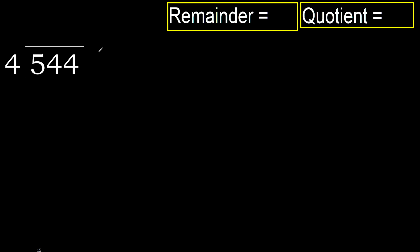544 divided by 4. 5 is not less, therefore we work with 5. 4. Multiply by which number is nearest to 5, but not greater. 4 multiplied by 2 is 8.